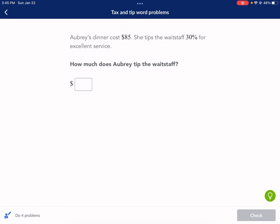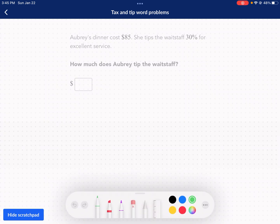So we have Aubrey's dinner costs $85. She tips the waitstaff 30% for excellent service. How much does Aubrey tip the waitstaff? So in order to find a tip percentage, what we're going to do is we're just going to take the cost. We are going to multiply this by the tip percent. And that has to be written as a decimal. That's a key feature. This needs to be written as a decimal before you can multiply. And then that's going to be equal to our tip amount.